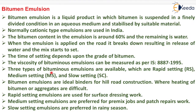Three types of bituminous emulsions are available: rapid setting, medium setting and slow setting. Bitumen emulsions are ideal binders for hill road construction where heating of bitumen or aggregates is difficult. Rapid setting emulsions are used for surface dressing work. Medium setting emulsions are preferred for premix jobs and patch repair works. Slow setting emulsions are preferred in rainy seasons.